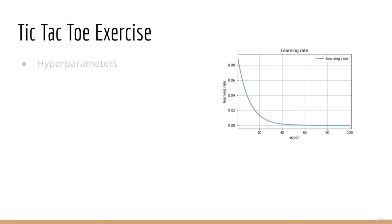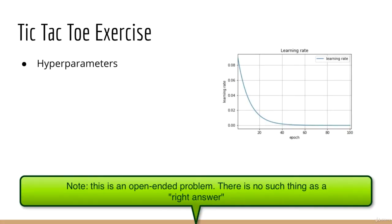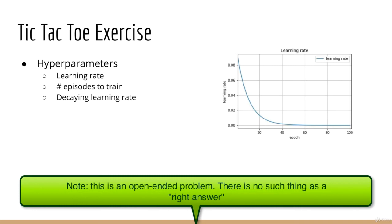Third, there are still other hyperparameters you can play around with. One example is the learning rate; another is the number of episodes to play. You might want to even try decaying the learning rate over time, and you might do the same with epsilon — start with epsilon really high and then decrease it to 0 as training progresses.